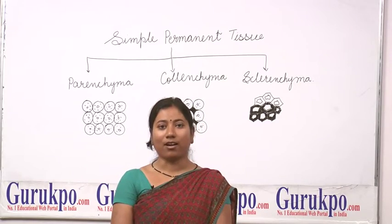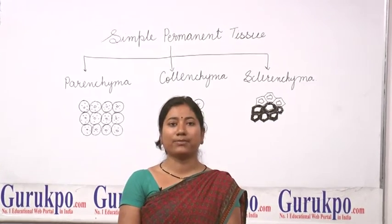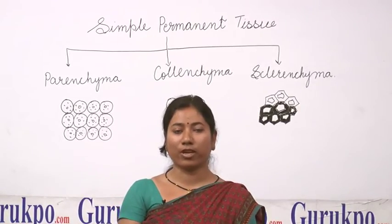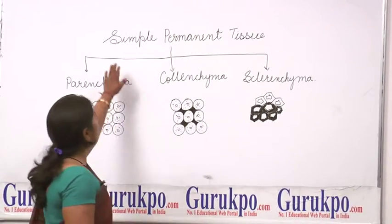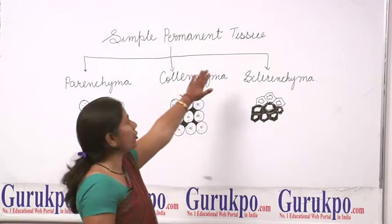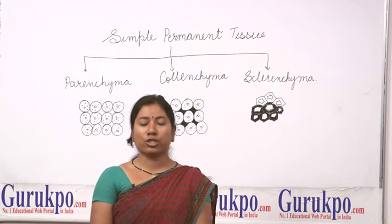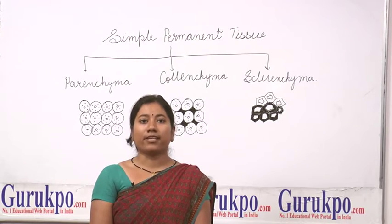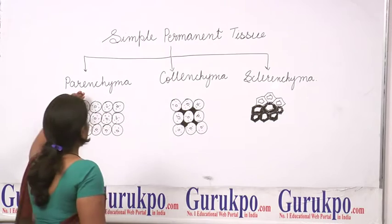Hello, I am Arthi Gupta, Assistant Professor in Biyani Girls B8 College. Welcome on behalf of Guru KPO. Today I am going to deliver my lecture on Simple Permanent Tissues. Simple Permanent Tissues are those tissues that are made up of cells that are similar in structure, function and origin. It is of three types: Parenchyma, Collenchyma and Sclerenchyma.